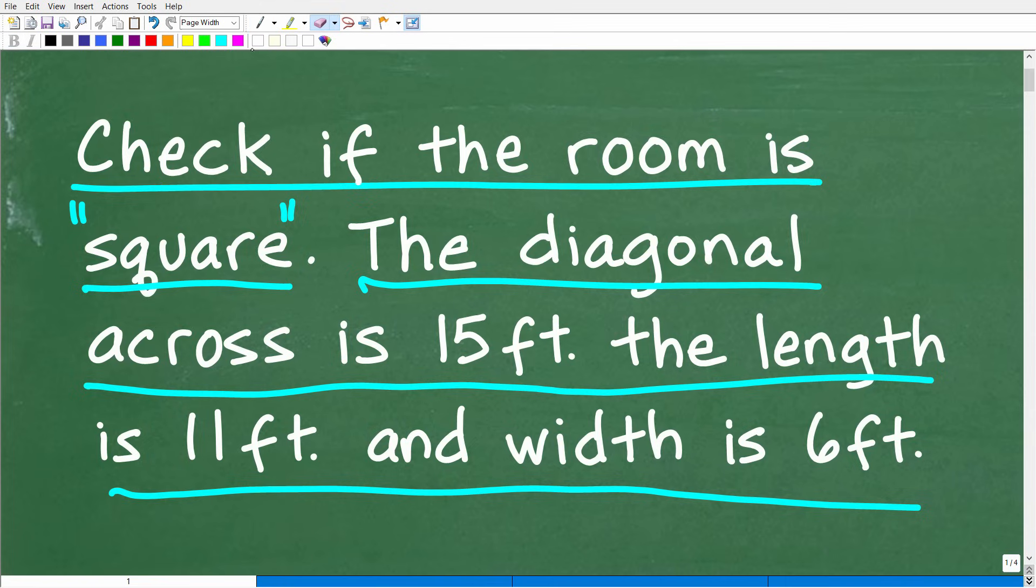Now, the answer is either going to be yes or no, right? So the room is either square or it is not. So we're going to check to see if a room is square. So what does this square mean?